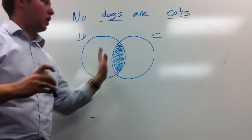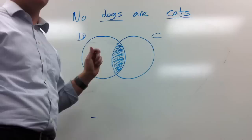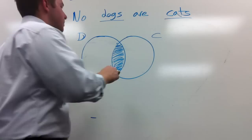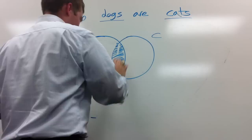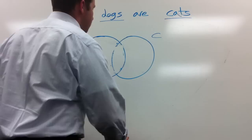So E statements will be graphed like that every single time. No dogs are cats. Every single time, graphed in the middle. So it's easy. No matter where it is, that's how it'll be. Every E statement, every time. So that's E.